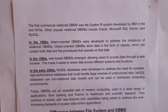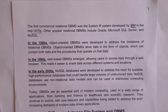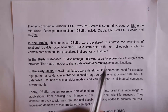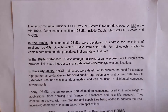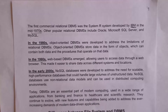The first relational database management system software was developed by IBM in the mid-1970s. Some of the popular relational database management system software are Oracle, Microsoft SQL Server, MySQL, and PostgreSQL. All of these are examples of relational database management system software.